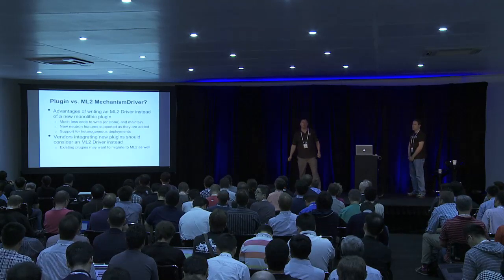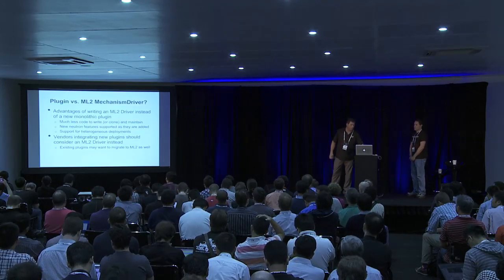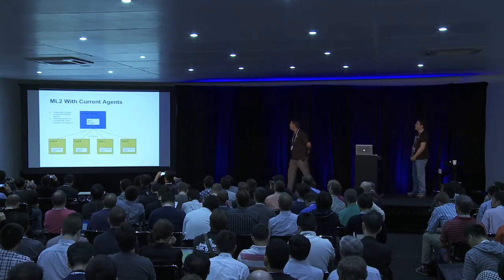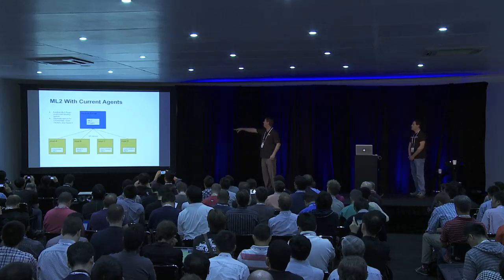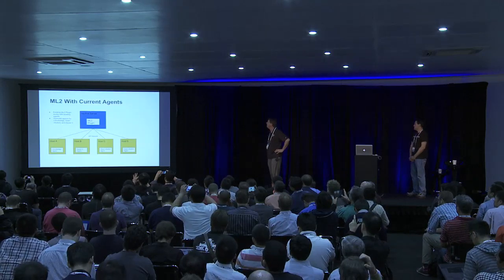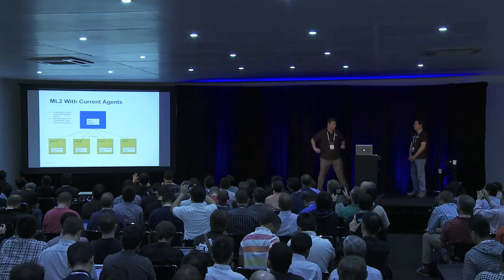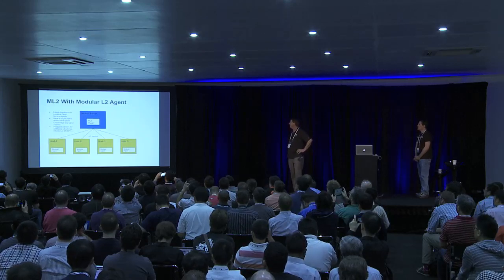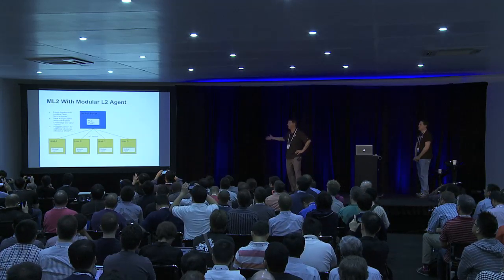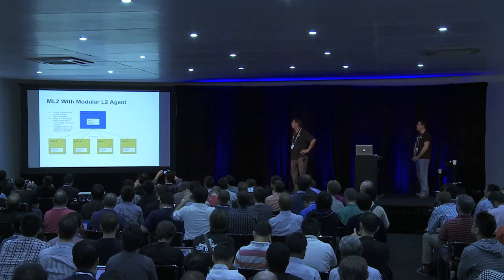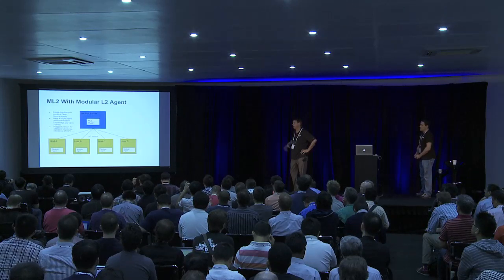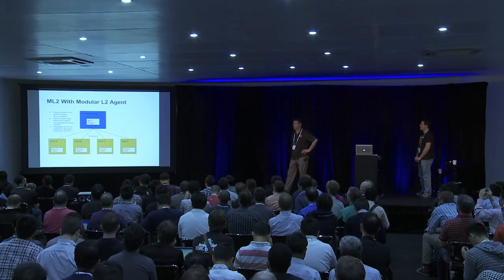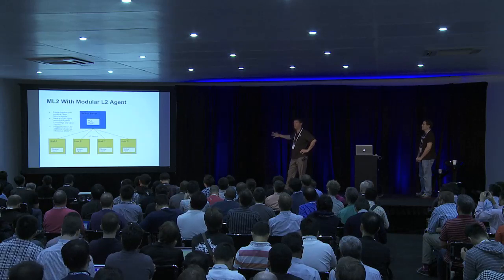If you've got an existing plug-in, consider replacing it with or adding a driver. One area being considered is developing a modular Layer 2 agent where the same agent could run on different nodes with drivers supporting different virtual switching technologies. This could also support special features like SRIOV and PCI pass-throughs under discussion in Nova, potentially plugging into these agents and helping eliminate the tendency to clone an agent and add a feature.